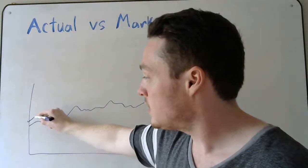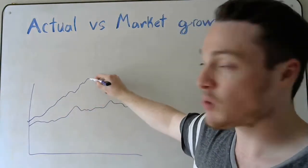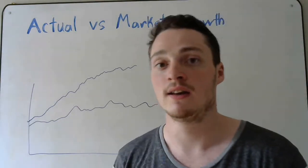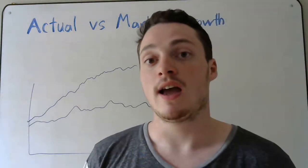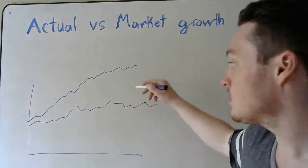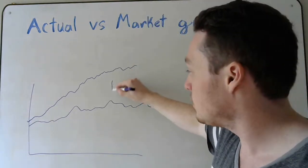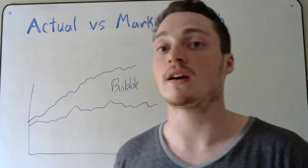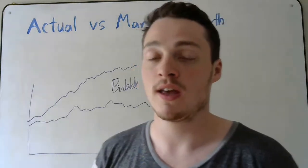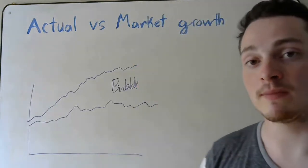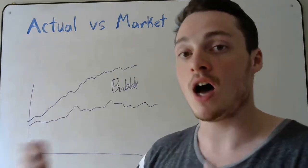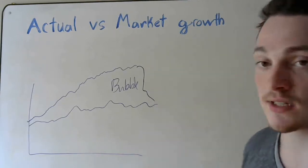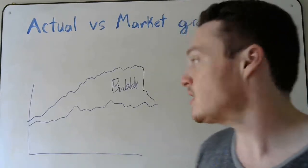What happens with a market bubble is that you typically see market growth tracking similar to actual growth, but then over time, for whatever reason, prices really start to go up comparatively to the actual market. The issue with this gap — the bubble — is that it doesn't actually exist. There's no actual growth there; it's a hypothetical growth. Eventually, when it becomes an unrealistic evaluation of market value, the bubble will pop.